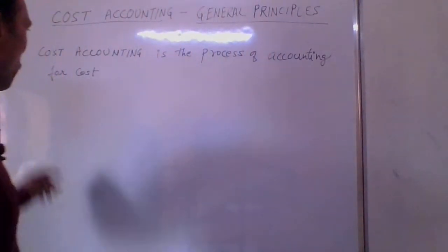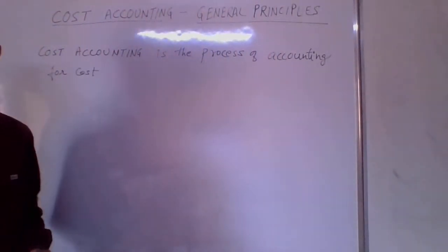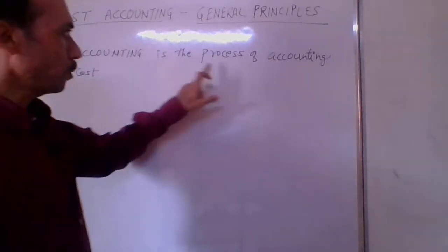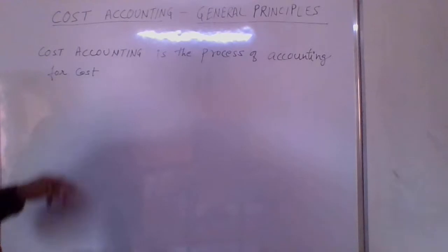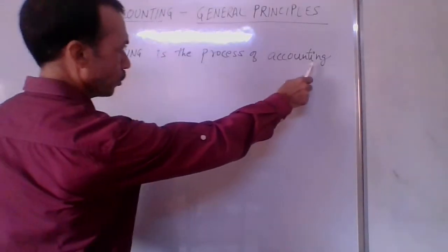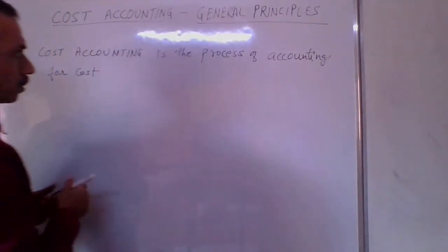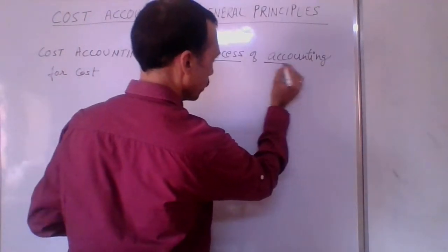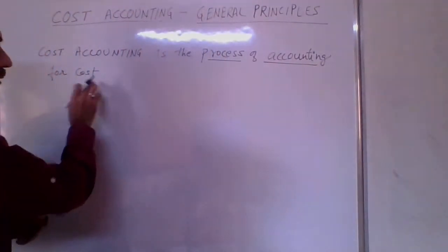First, the definition of cost accounting. What is cost accounting? Cost accounting is the process of accounting for cost. It is a continuous process of accounting for cost.